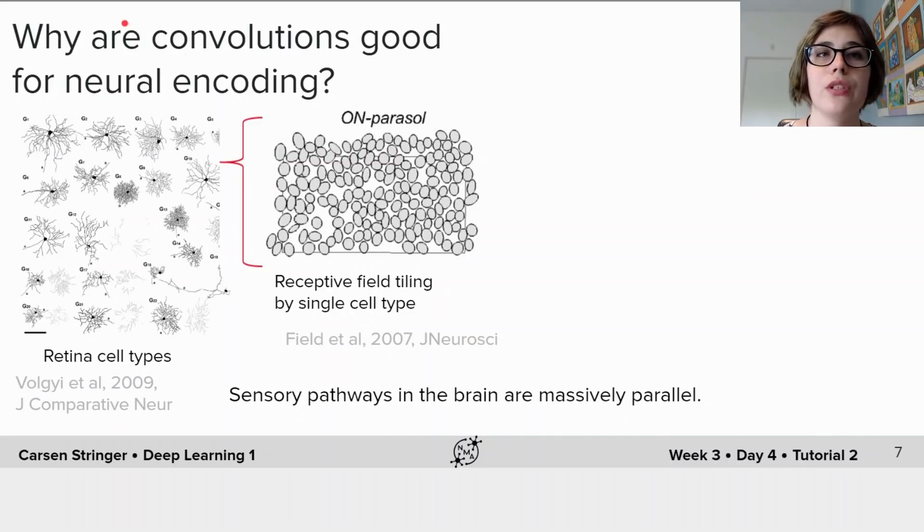So why are convolutions good for encoding models in the brain? In fact the brain itself has a convolutional-like architecture. So in the retina there are a variety of cell types which we can think of as different filters, and each of these cells tile the entire visual space.